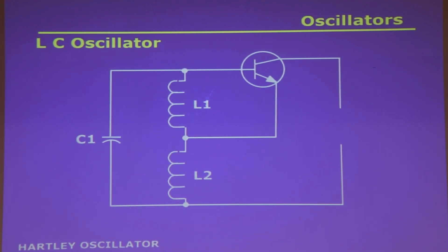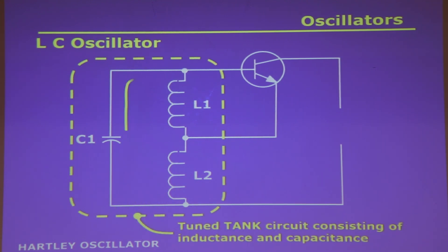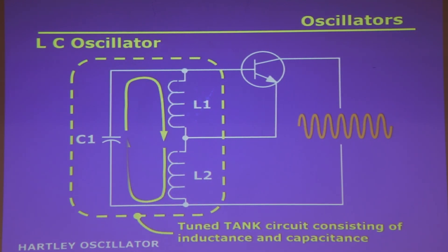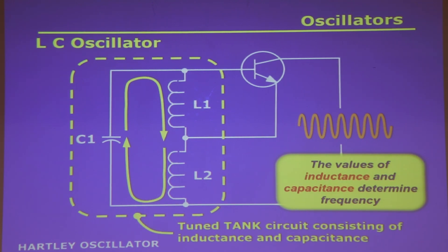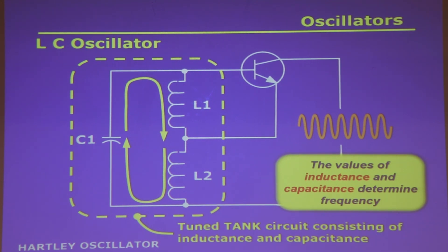This is an LC oscillator. L is the abbreviation for inductor, and C is the abbreviation for capacitor. It's composed of an inductor — that thing that looks like a coil — and a capacitor. This particular one drives a transistor. The rate of oscillation is dependent upon the value of the inductance and the value of the capacitance. Change one or the other, and you change the frequency.